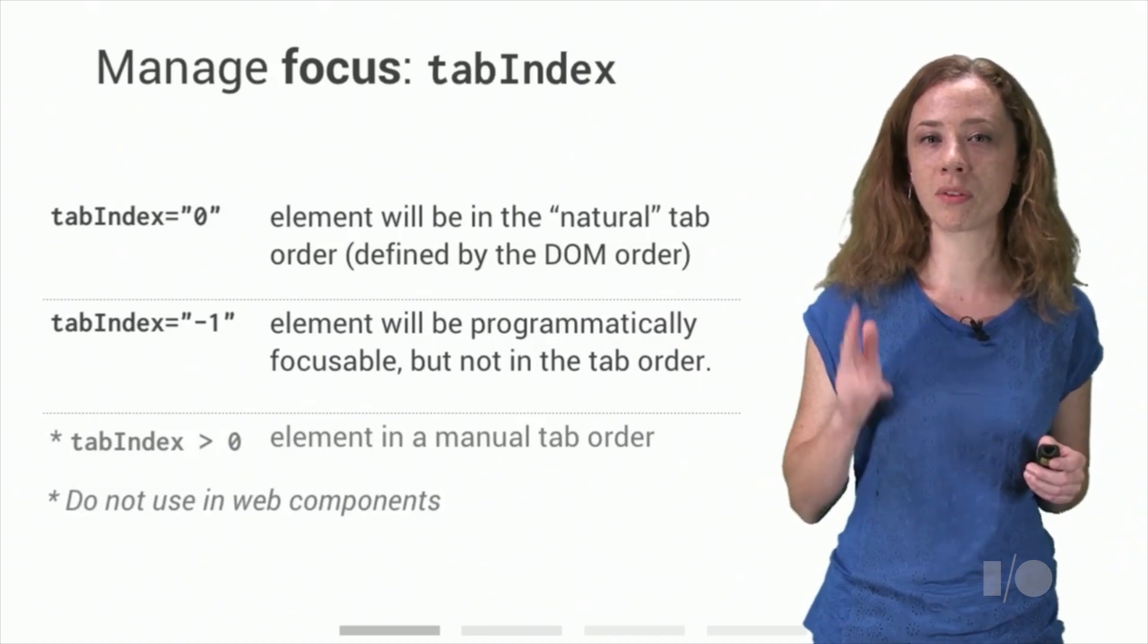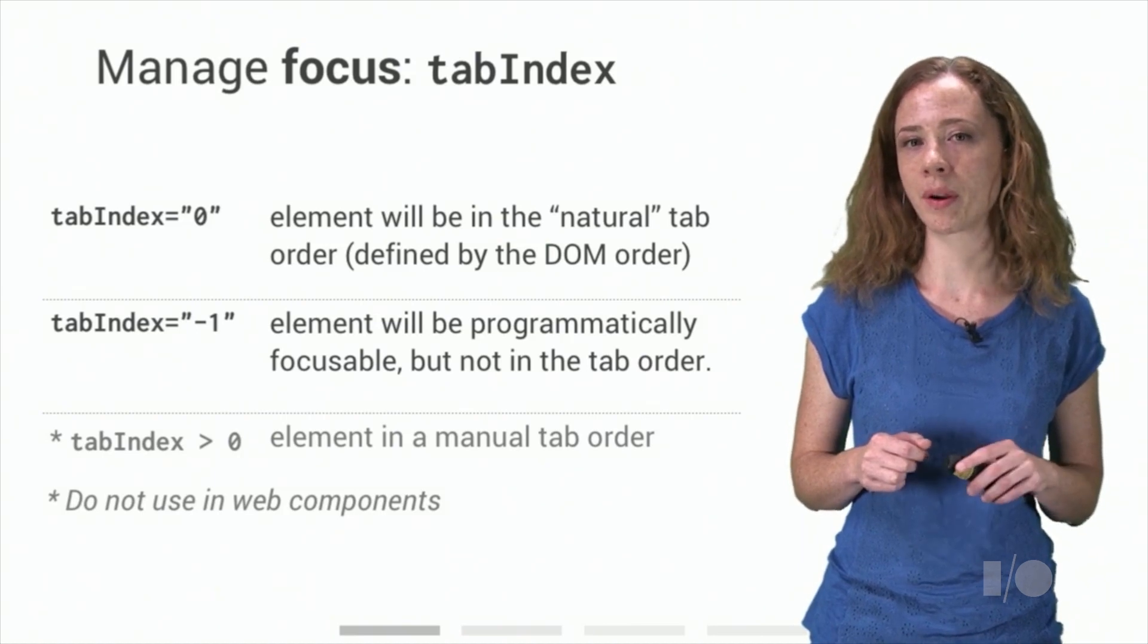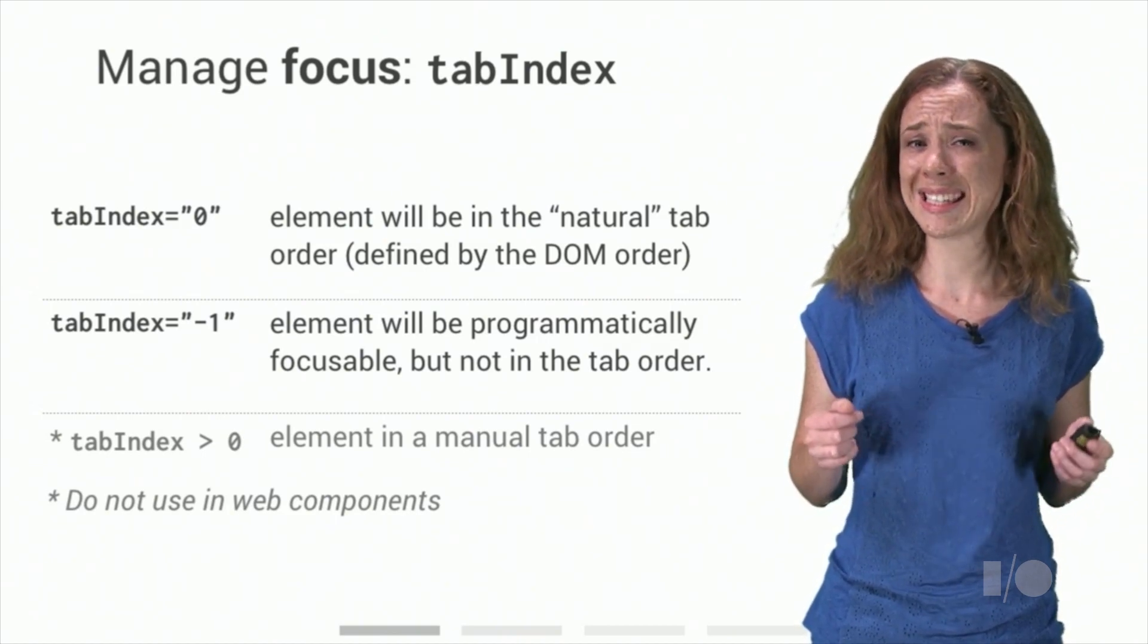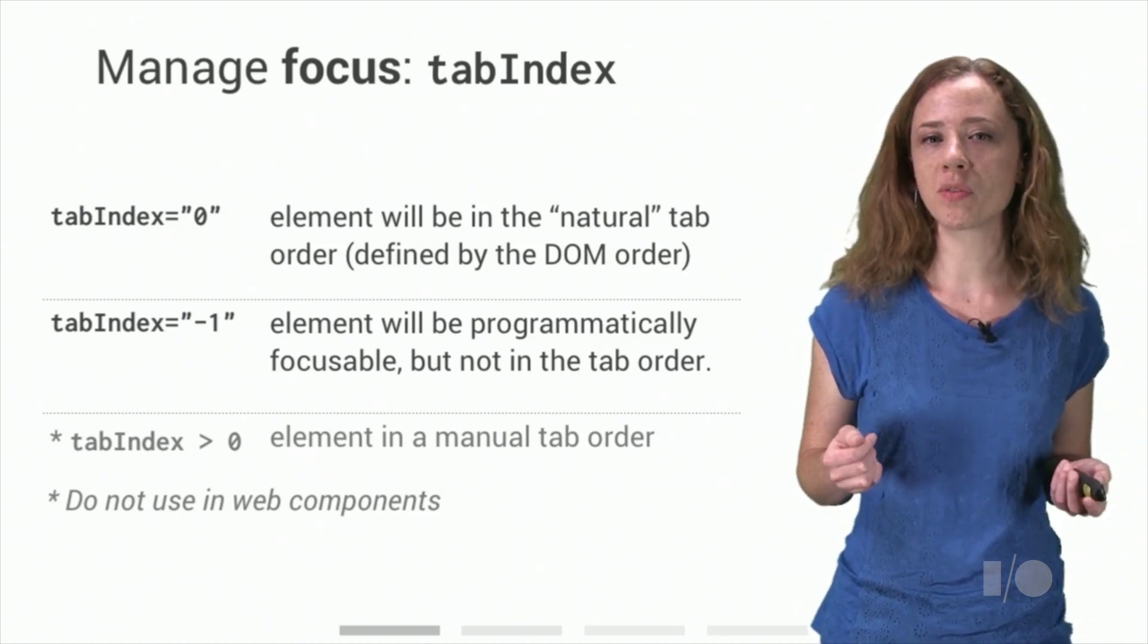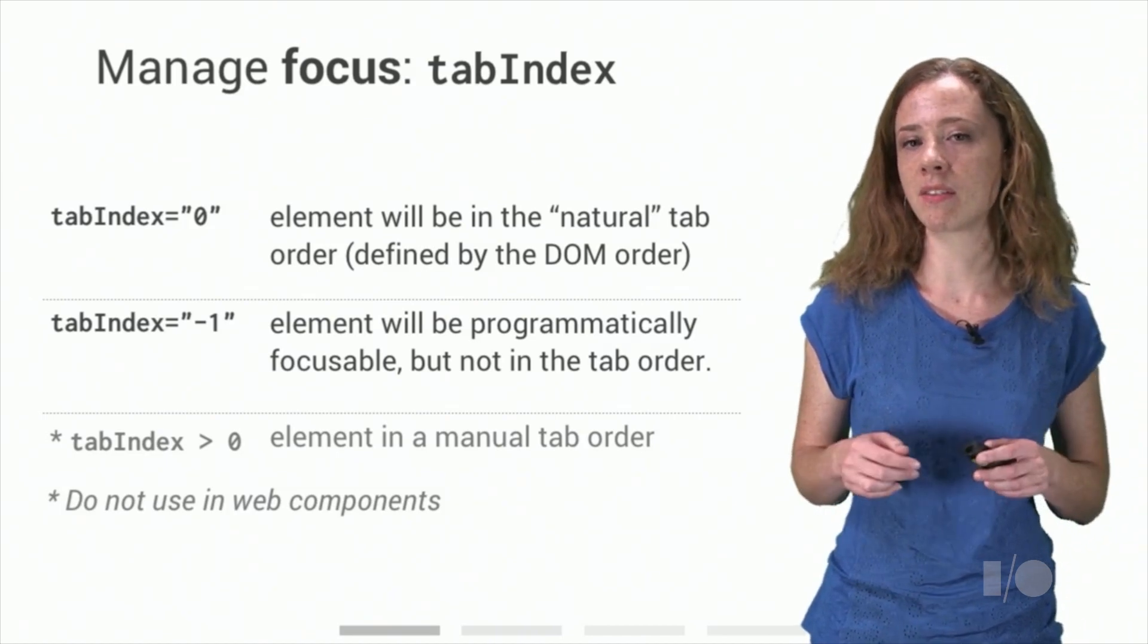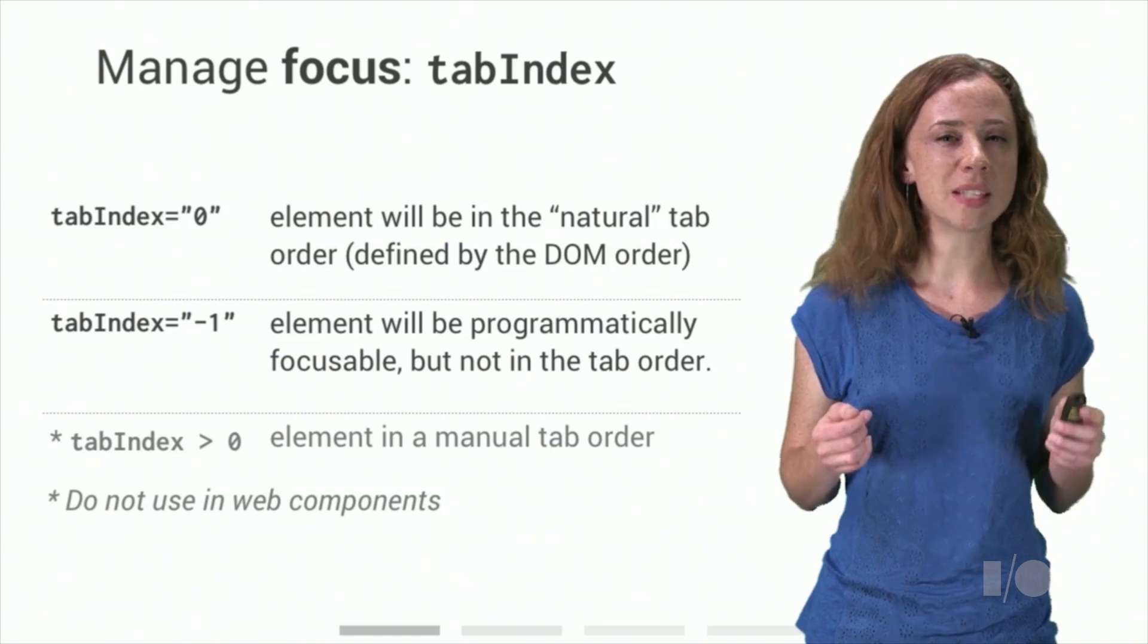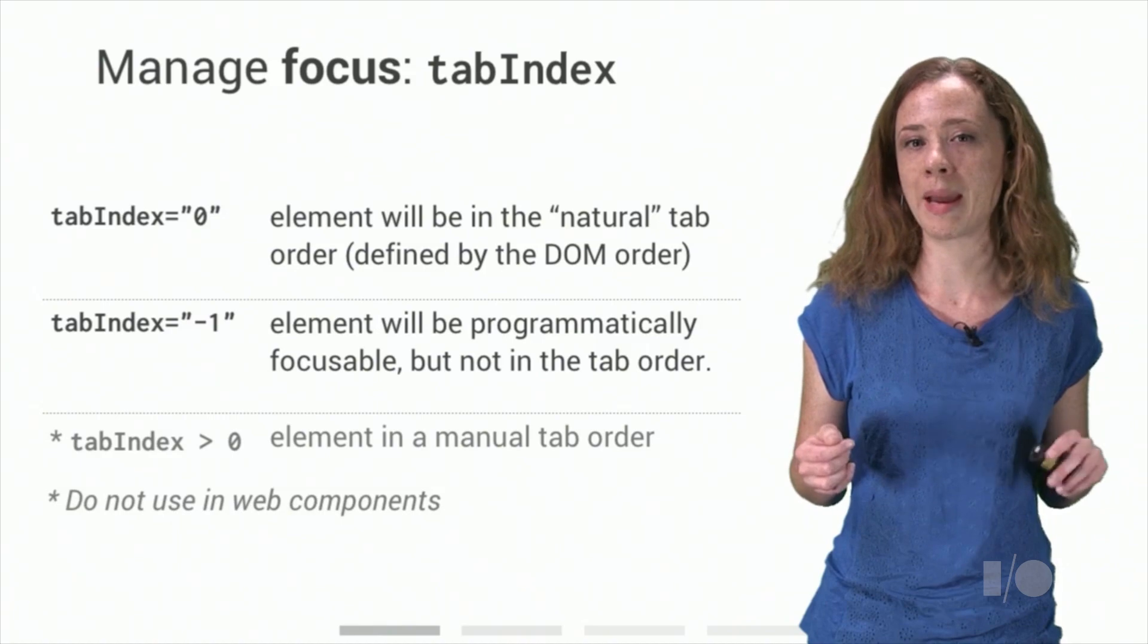Tab index can take one of three classes of values. When tab index is zero, the element will be in the natural tab order, which is defined by the DOM order. This is what you would use to make a custom element, such as custom button, keyboard focusable. When tab index is negative, the element will be programmatically focusable, but not in the tab order. This will be useful for something like the menu example on the previous slide. The menu container element can manage setting focus to each individual menu item when appropriate. When tab index is greater than zero, the element will be in a manual tab order. This makes no sense in the context of web components, since you essentially never know where your element will fall on the page.